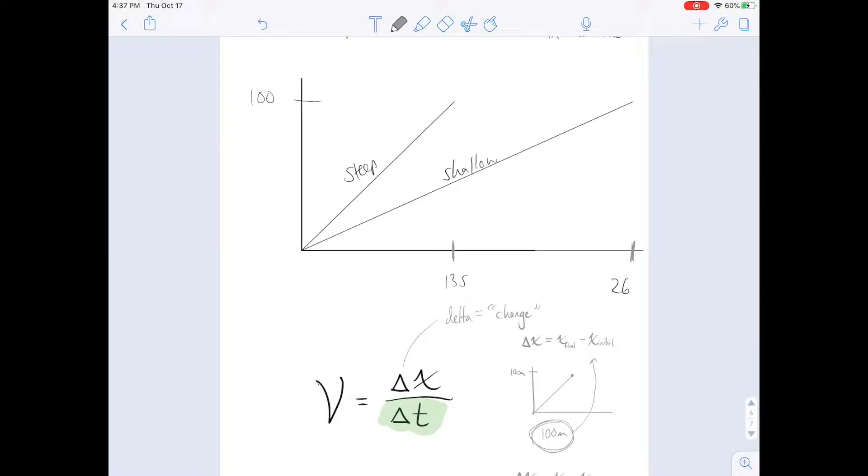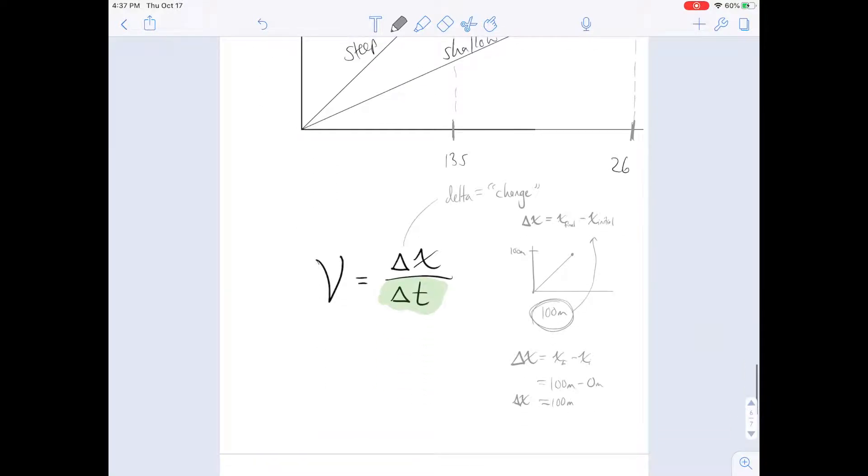Student A is the fast student, and student B is the slow student, which we determined in the last video. So let's try and find the exact velocity of student A and student B. So the exact velocity for student A is going to come from the formula. So let's do it a couple of times here.